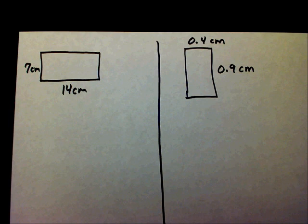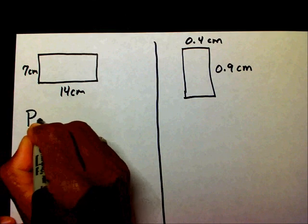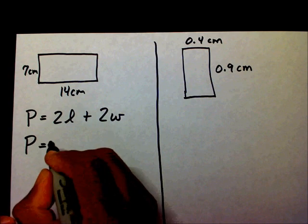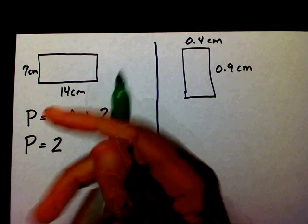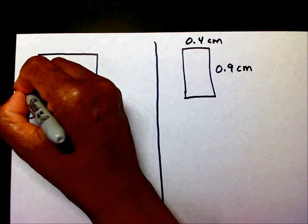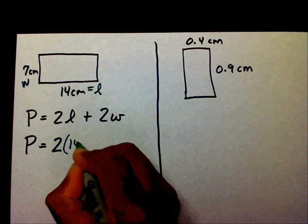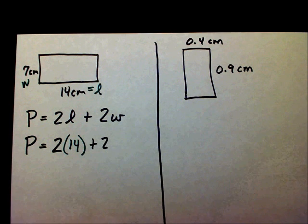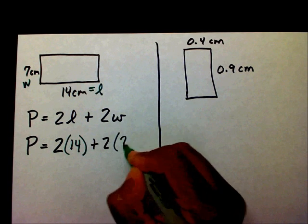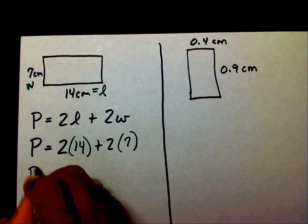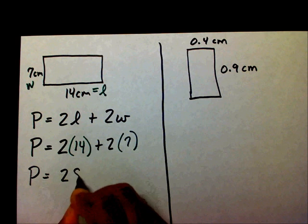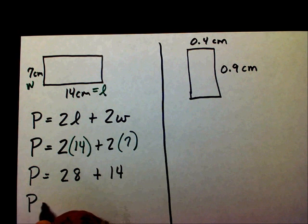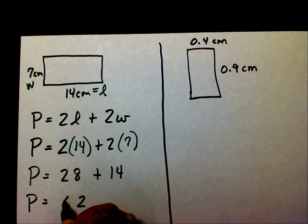Welcome back. Let's find the perimeter. Our formula is P equals 2L plus 2W. So P equals 2 times — my length is going to be 14 and my width is going to be 7 — so 2 times 14 plus 2 times 7. I need to find each product: 2 times 14 is 28, bring down my plus, and 2 times 7 is 14. Therefore, my perimeter is going to be 42 centimeters.